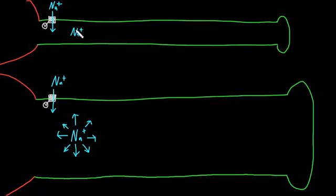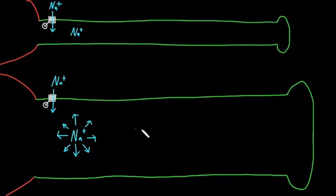The same is true for the sodium ion in the small diameter axon — it could go in an infinity of directions as well, just like in the larger diameter axon. But now let's consider the obstacles to this sodium ion moving down the axon.